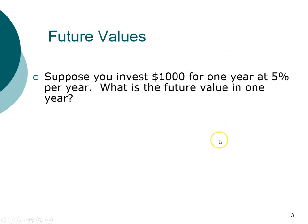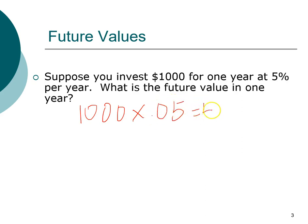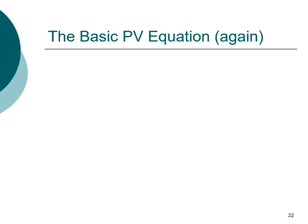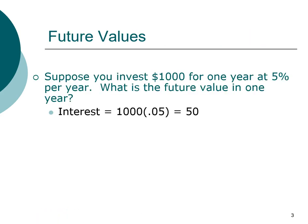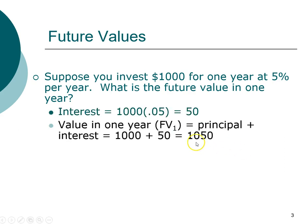Let's say you invest one thousand dollars for one year at five percent per year. What is the future value in one year? Five percent of one thousand dollars is fifty dollars in interest. With that fifty dollars in interest added to the original one thousand dollars, at the end of one year you have a total of one thousand fifty dollars. We call the one thousand dollars our principal and the fifty dollars is our interest.